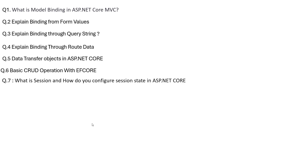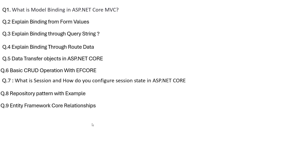What is a session and how do you configure session state in ASP.NET Core? With the help of services, we configure the session. A session is a persistent object — it persists your object data because HTTP is a stateless protocol. Entity Framework Core supports three types of relationships: one-to-one, one-to-many, and many-to-many.